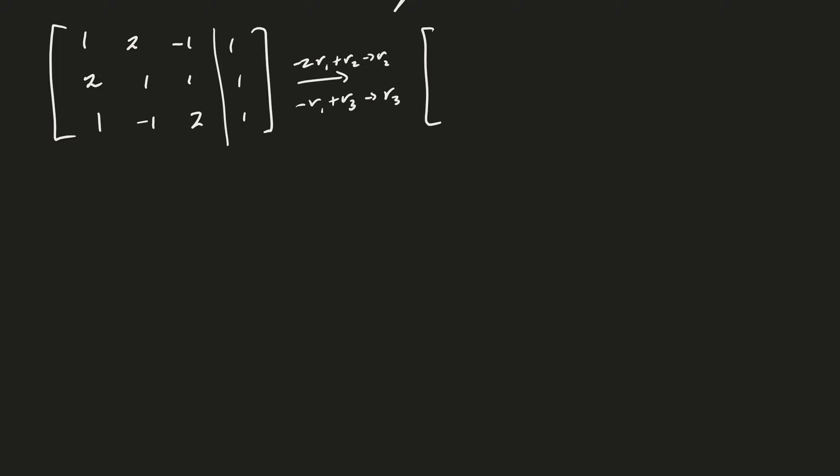And let's see, 1, 2, minus 1, 1. And then, minus 2 plus 2 would be 0. Of course, that's how we planned it. Minus 1 times 1 is 0.